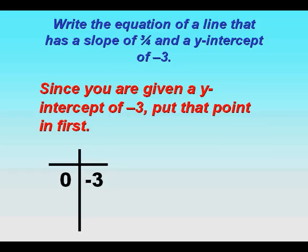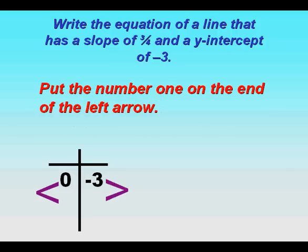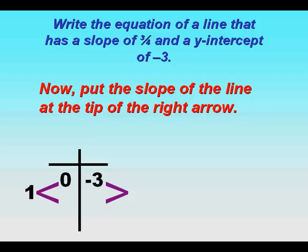Now the next thing we're going to need to do is find the second point. We need to draw arrows on each side of the table, and we put the number one on the end of the left arrow. Now we need to put the slope of the line at the tip of the right arrow. In this case it's three quarters or 0.75.